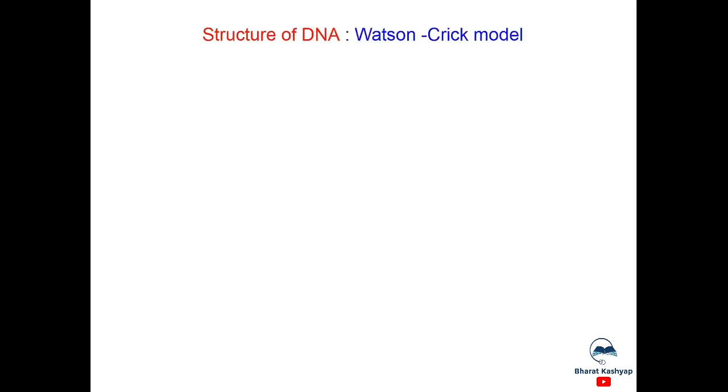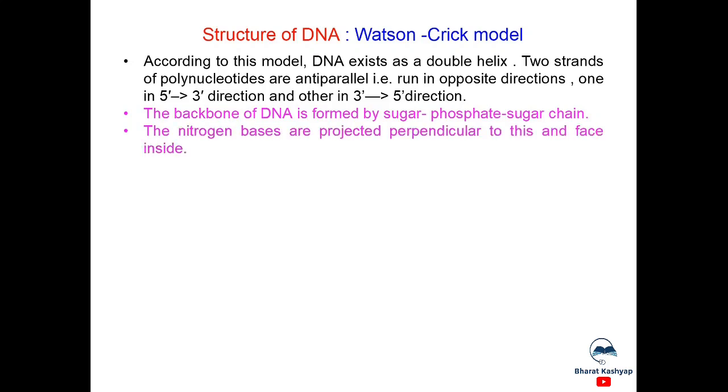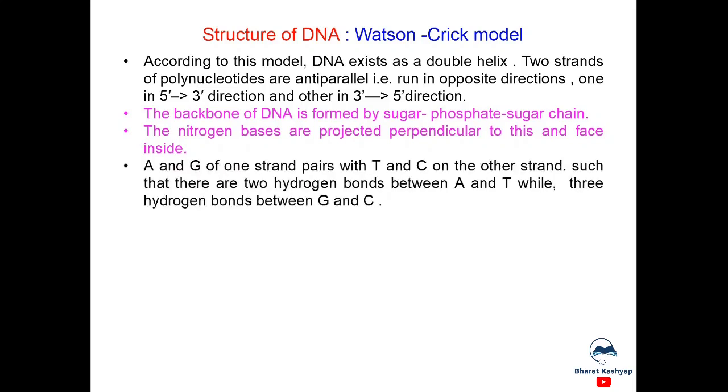Now, structure of DNA. It is best explained by Watson and Crick model. According to this model, DNA exists as a double helix. The two strands of polynucleotides are anti-parallel that is run in opposite directions, one in 5 dash 3 dash direction and other in 3 dash to 5 dash direction. The backbone of DNA is formed by sugar phosphate sugar chain. The nitrogen bases are projected perpendicular to this and face inside. Adenine and guanine of one strand pairs with thymine and cytosine on the other strand, such that there are two hydrogen bonds between adenine and thymine while hydrogen bonds are three in case of guanine and cytosine.